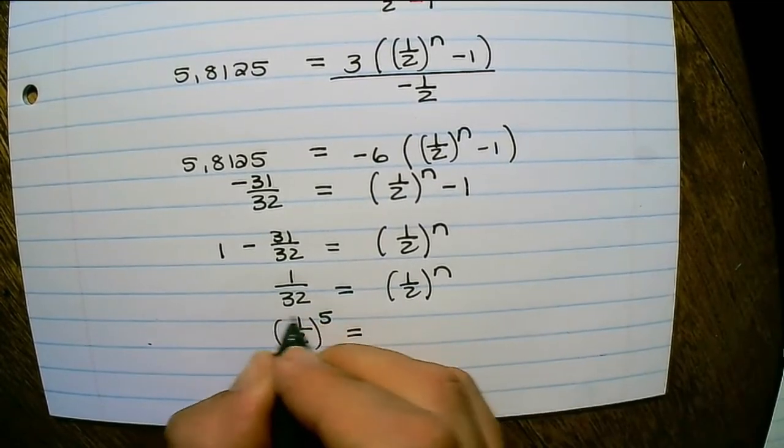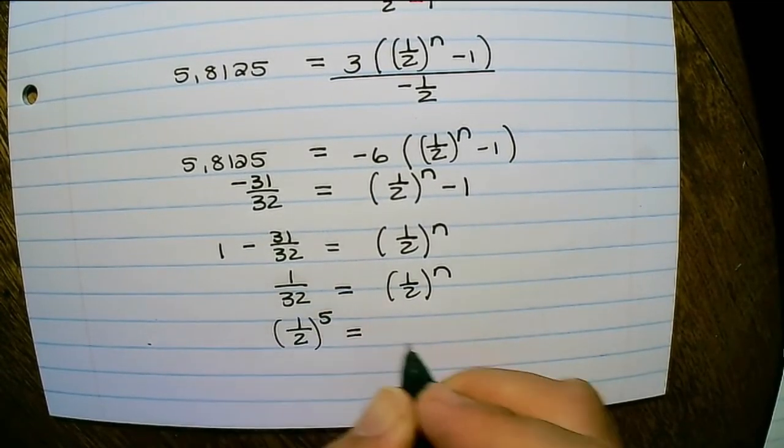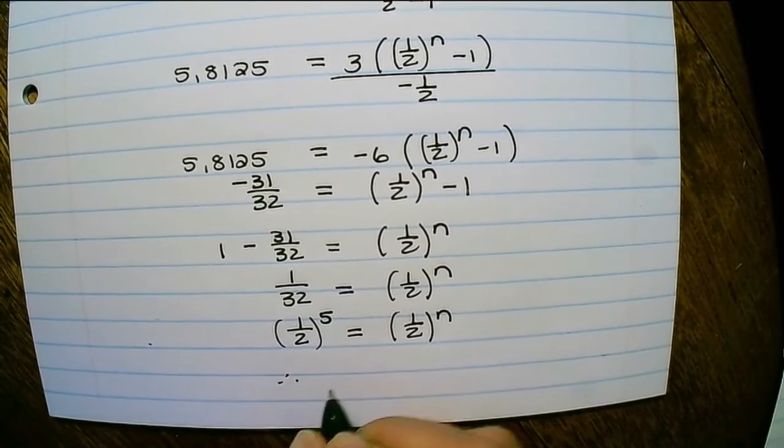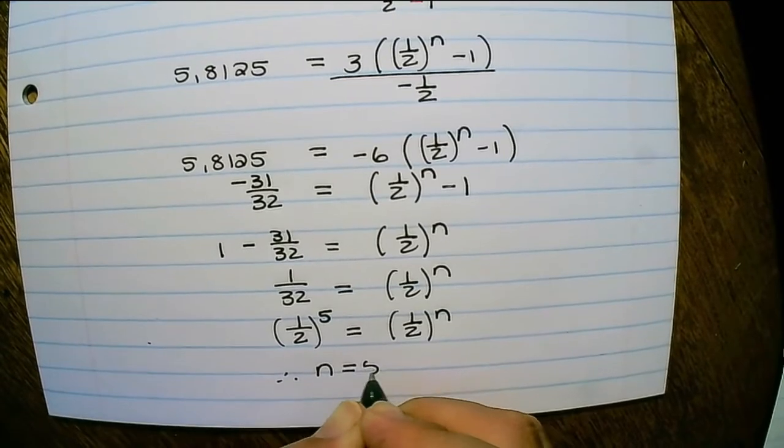Because 32 is 2 to the power of 5. Therefore, n is equal to 5.